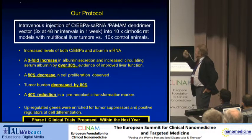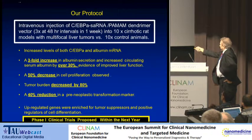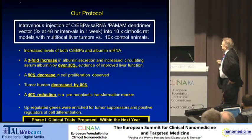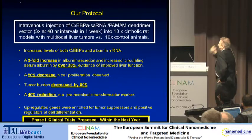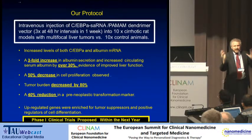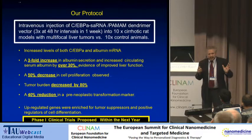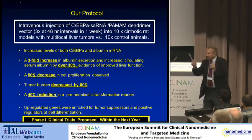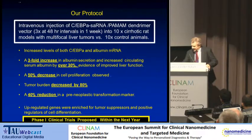All genes observed were upregulated and found to be enriched for tumor suppressants and positive regulators of cell differentiation. It was so exciting — we were ready to go to phase one clinical trials a little over a year ago. However, I'll tell you where the story changes.